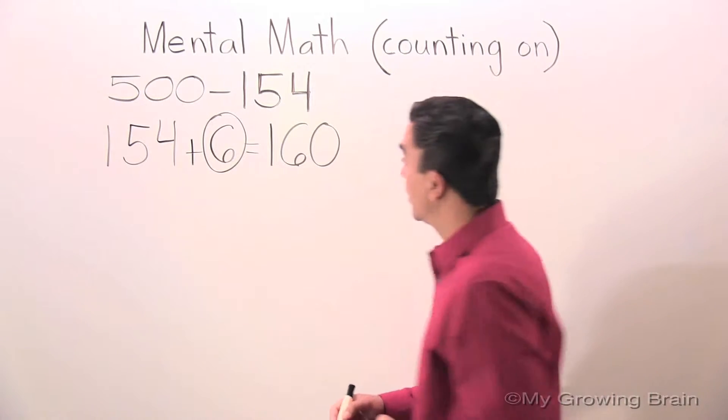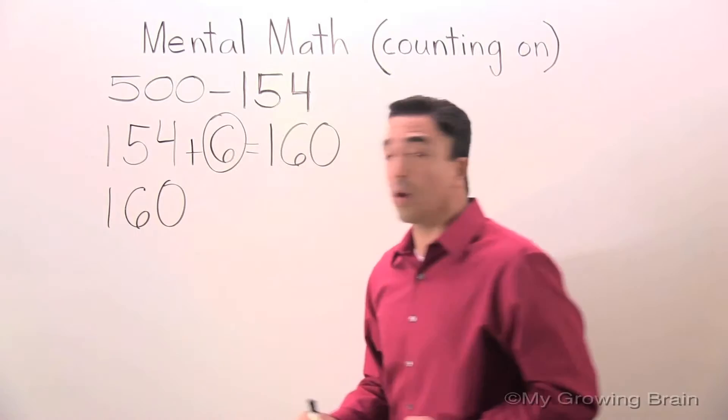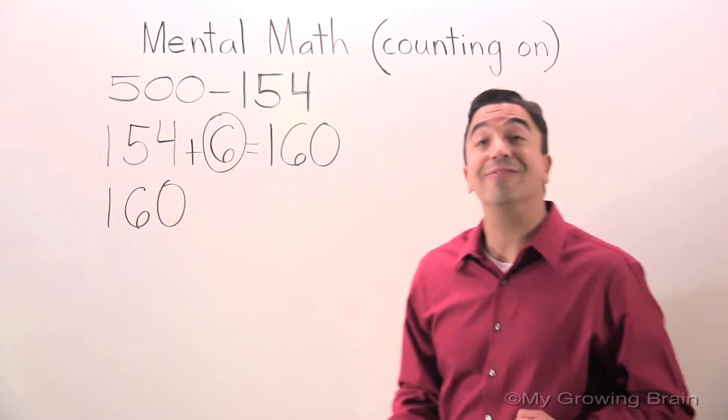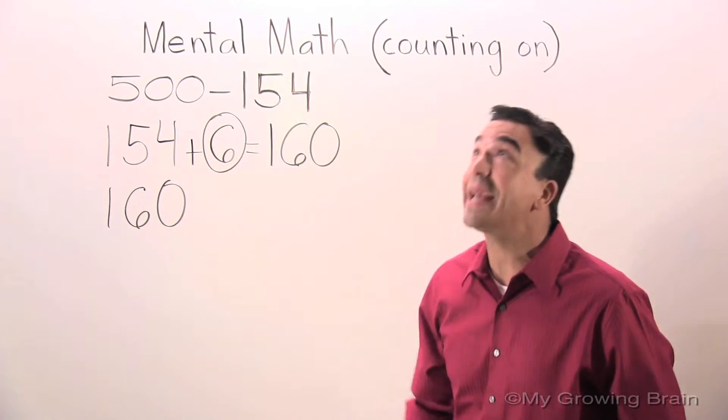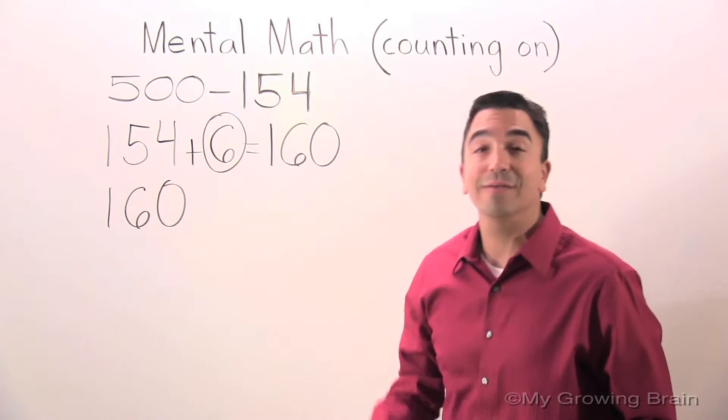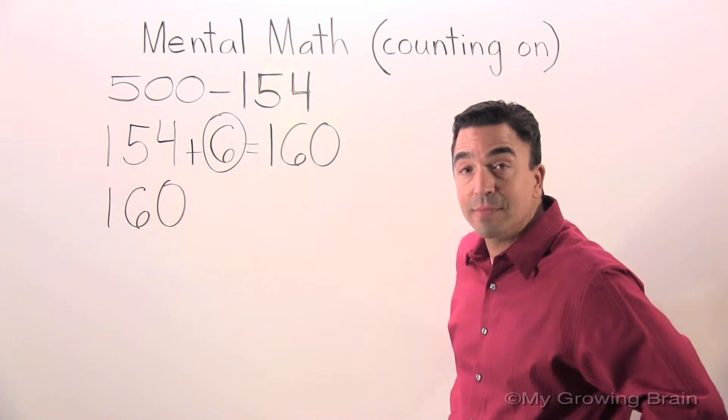Next step. We're going to take 160 and round up to the nearest hundred. We're going to count up to the nearest hundred, which is 200.